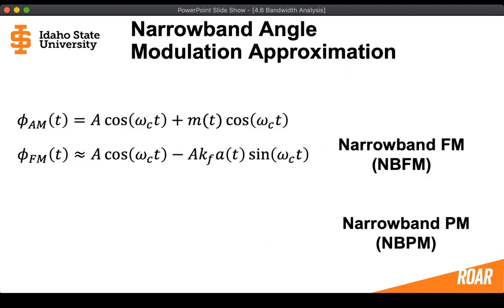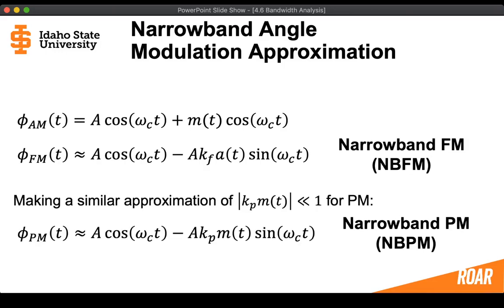Now, we can also rewrite this, we can say that this is the narrowband FM approximation, and then if we make a similar approximation for Kp times the message being much, much less than one for the phase modulated case, then we can see that the phase modulated signal, which is the narrowband phase modulated signal, is going to have a very similar approximation to the frequency modulated signal. And you're going to prove this expression for narrowband phase modulation in the homework.